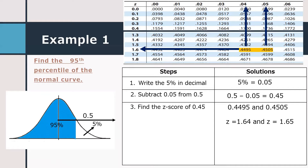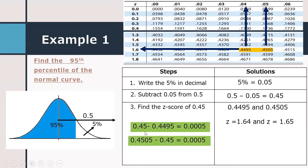Which of these two z values is the 95th percentile? We find which area is closest to 0.45. Subtracting: 0.45 minus 0.4495 equals 0.0005, and 0.4505 minus 0.45 also equals 0.0005. Since the differences are equal, we take the mean of 1.64 and 1.65, which is 1.64 plus 1.65 over 2, equal to 1.645.